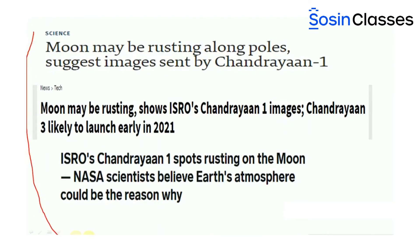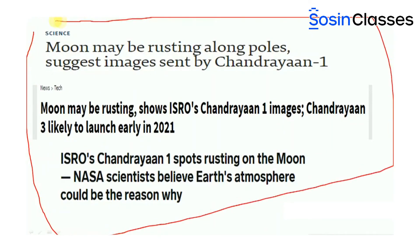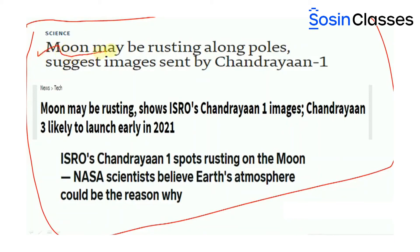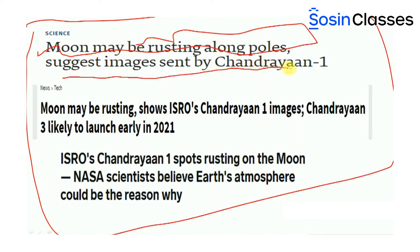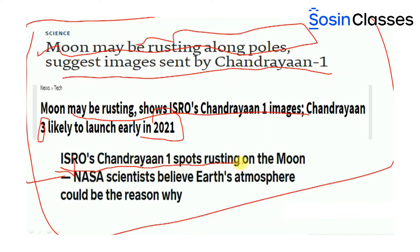Moving on to the second article — here are the latest headlines on discoveries by Chandrayaan-1: 'Moon may be rusting along the poles, suggest images sent by Chandrayaan-1'; 'Moon may be rusting, shows ISRO's Chandrayaan-1 images'; 'Chandrayaan-3 likely to launch early in 2021'; and 'ISRO's Chandrayaan-1 spots rusting on the moon and NASA scientists believe that the Earth's atmosphere could be the reason why.'